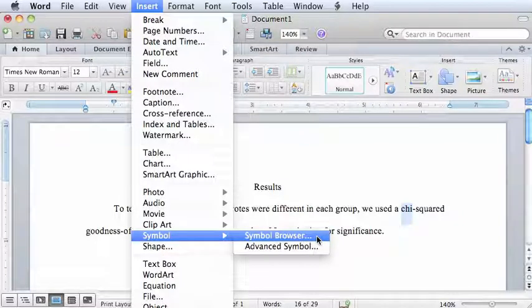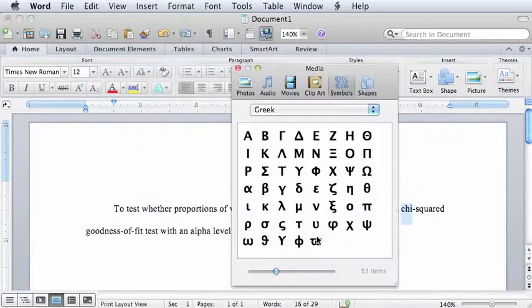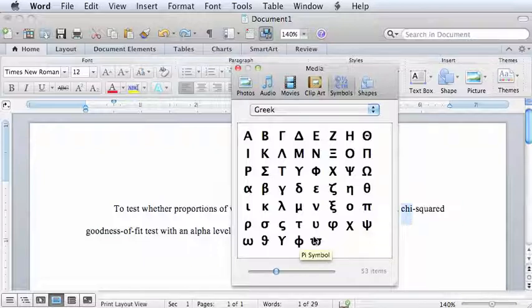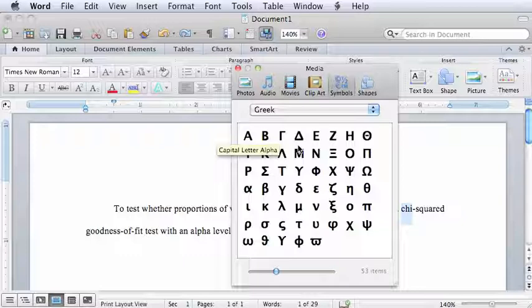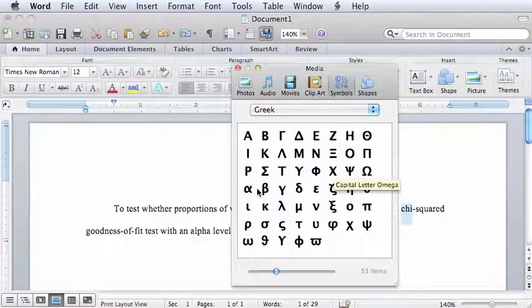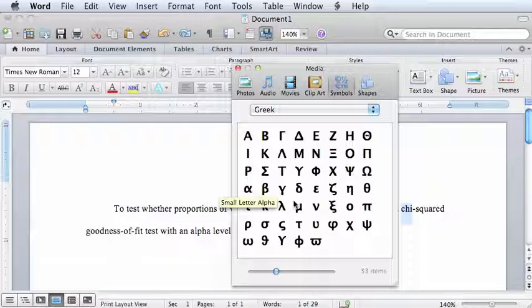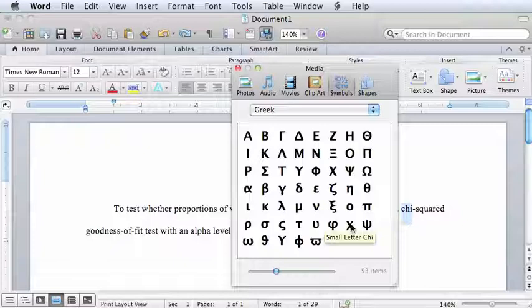A separate media window opens, which contains Greek letters in the Symbols tab. Notice that the list begins with capital letters, alpha through omega, but statistical symbols are usually composed of lowercase letters. Choose the lowercase symbol for Chi, which will be entered in the same format you are using.